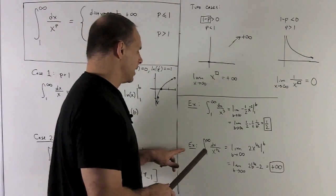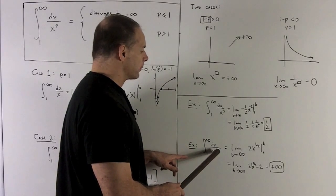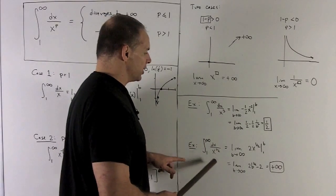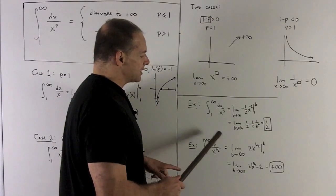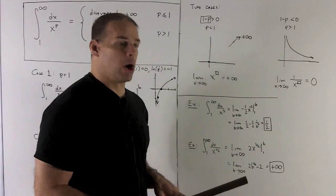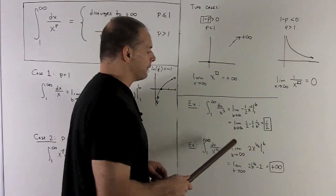My second case, let's take a look. I have dx over x to the 1 half. So we run through our procedure again. The antiderivative of this is going to be add 1 and flip it over. So this is x to the minus 1 half. So if I add 1, it becomes 1 half. Flip it over. Puts a 2 out in front.